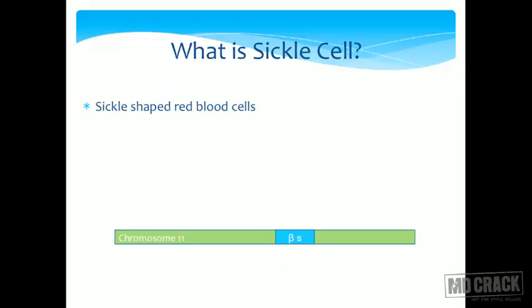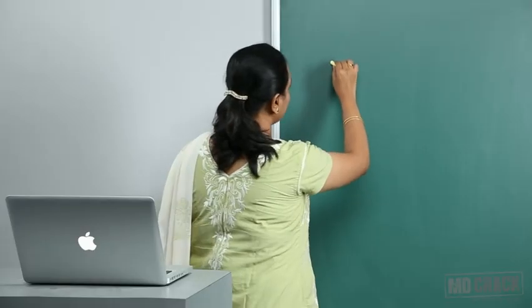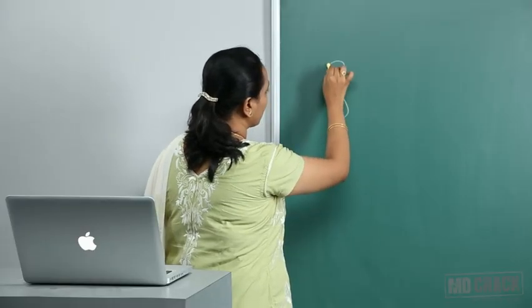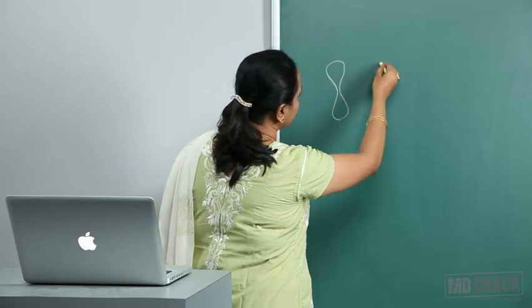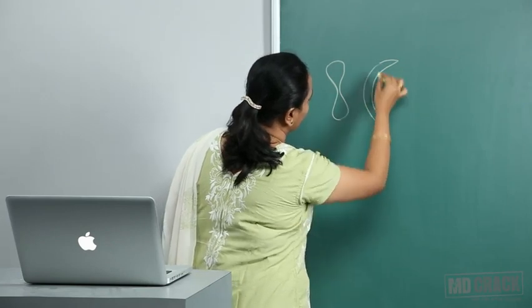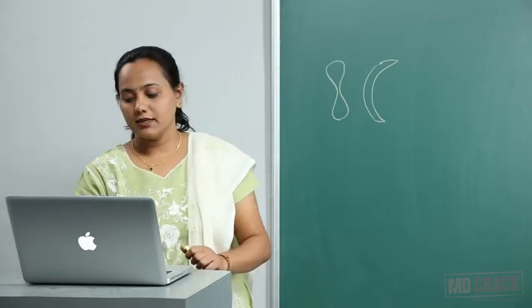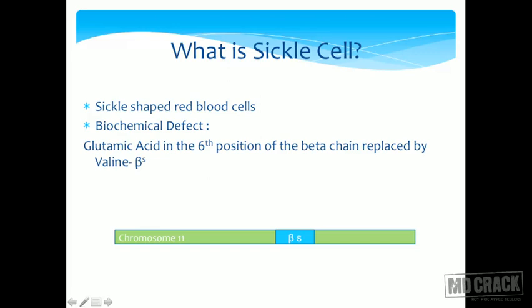We will look at the molecular basis of these conditions. In sickle cell anemia, the red blood cell loses its normal biconcave shape and becomes sickle-shaped. The biochemical defect is that glutamic acid in the sixth position of the beta chain is replaced by valine, and such a beta chain is represented as beta S.